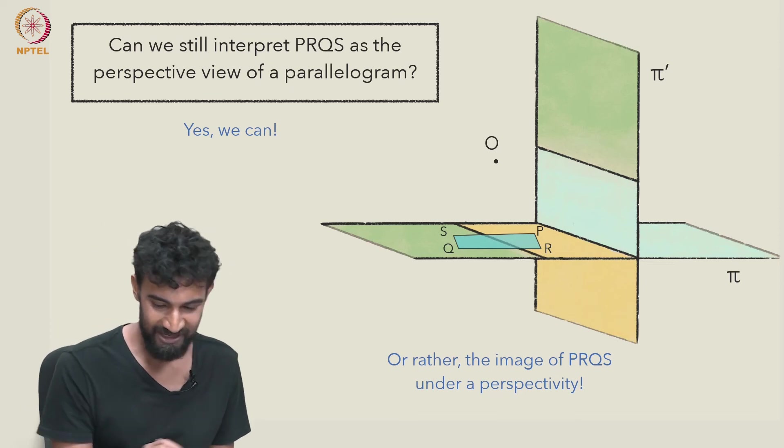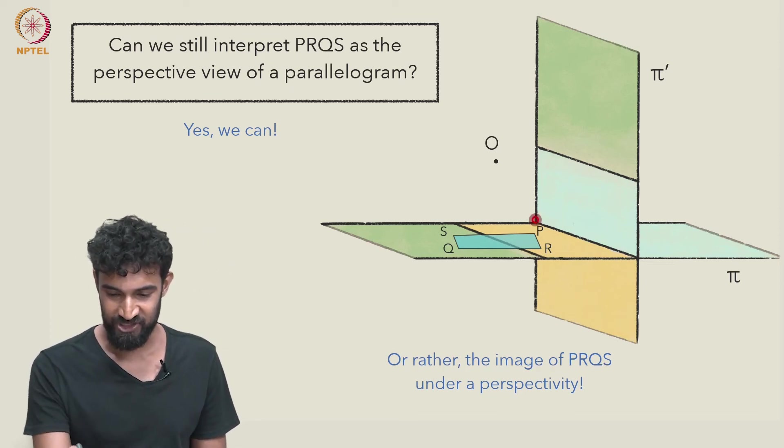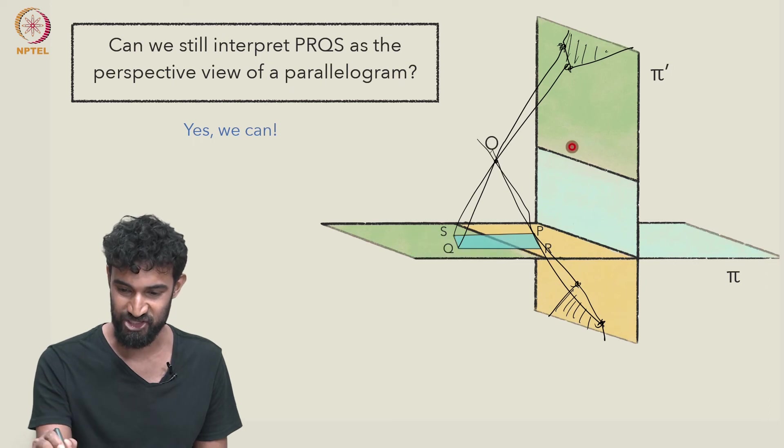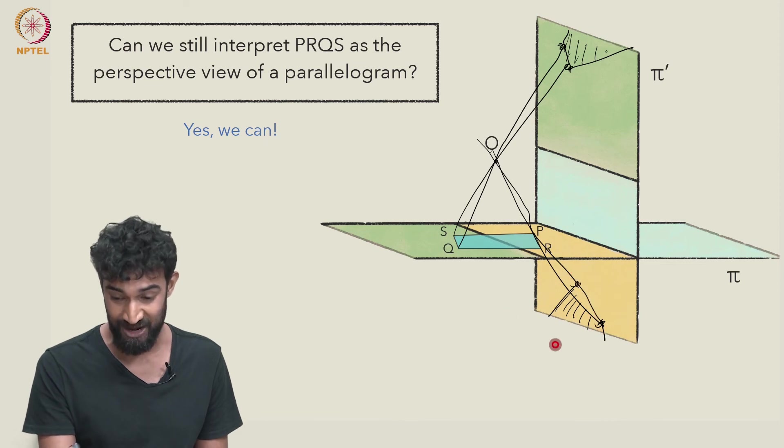You can convince yourself that the image of PRQS under a perspectivity is actually going to consist of something in this upper region here, because this is the green region which maps to this green region. And this part of the parallelogram lies in this yellow region, which is going to be projected down here.